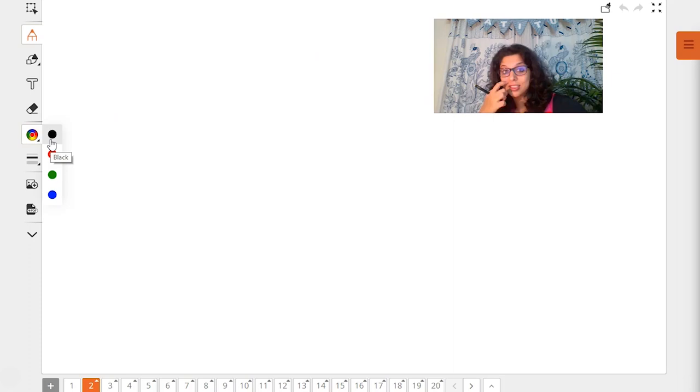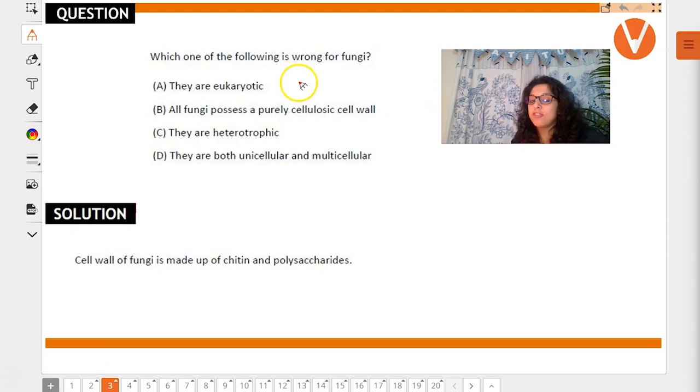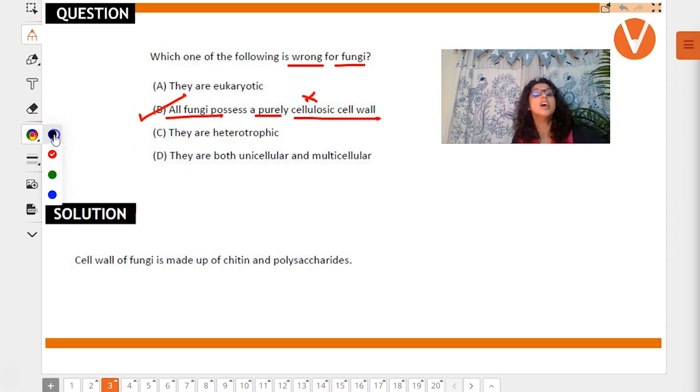Let's start without any further delay. Which one of the following is wrong for fungus? All fungi possess purely cellulosic wall is absolutely wrong, so this is the right answer. Because fungus cell walls are made of chitin and polysaccharides, not cellulose. Cellulose walls are in plants, not in fungus.